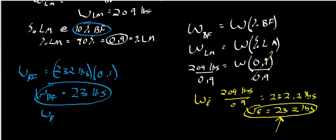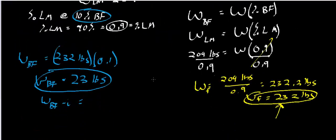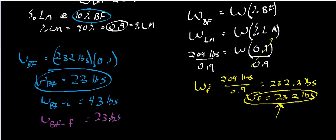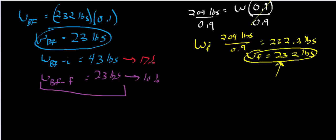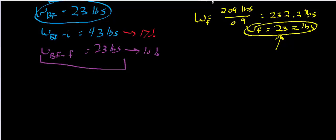Notice: the initial weight of body fat was 43 pounds. After weight loss, the weight of body fat is 23 pounds. So how much fat tissue or adipose tissue does this individual need to lose to get from 17% down to 10% body fat? You just take the difference: 43 minus 23 pounds equals 20 pounds. This person needs to lose 20 pounds of body fat.